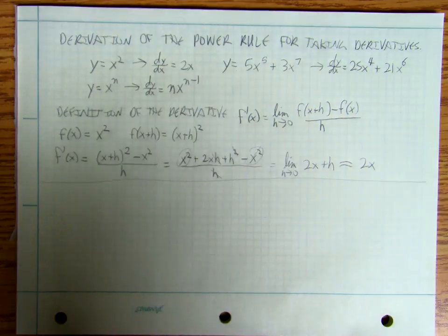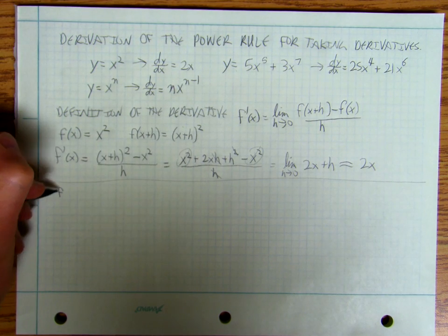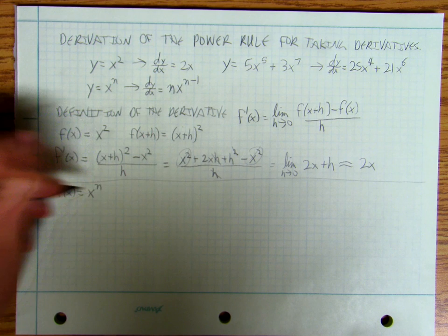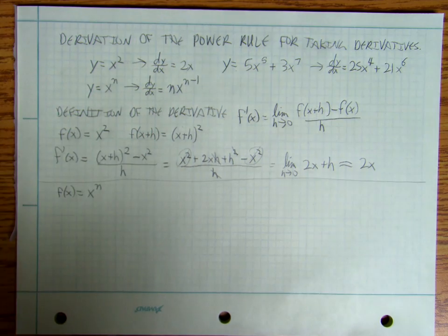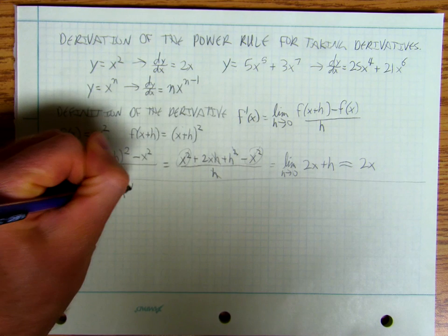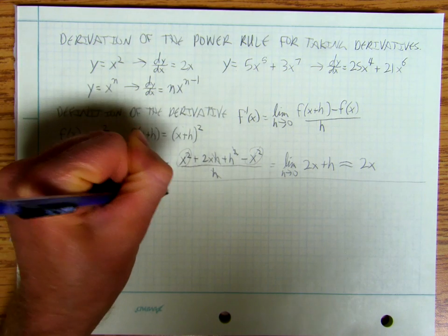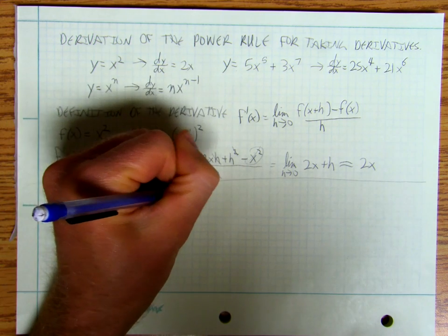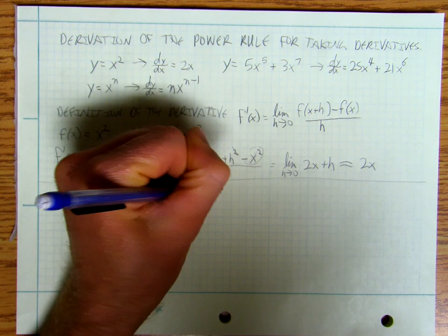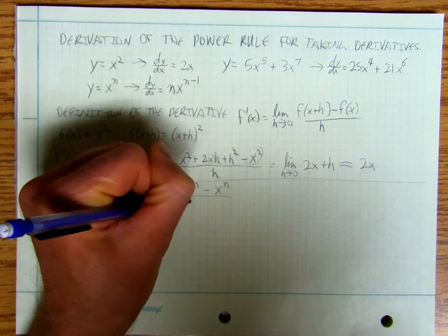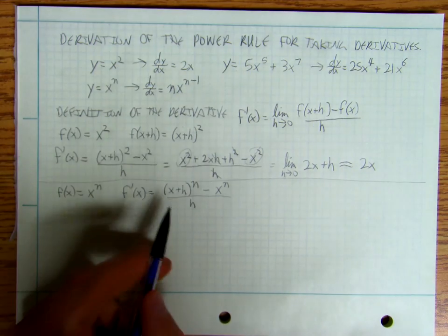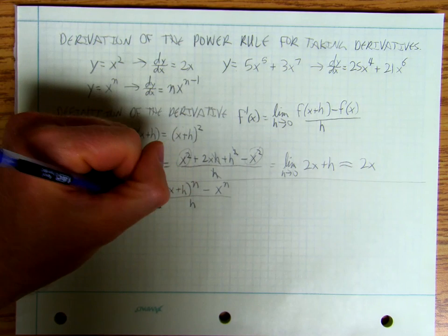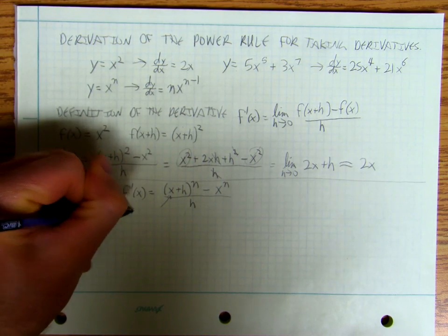So then let's suppose that f of x is equal to x to the n. Well then what I'm going to have is f prime of x is going to be equal to x plus h to the n minus x to the n, all over h. The way that I deal with this is by using the binomial theorem.